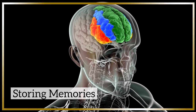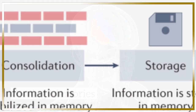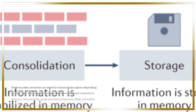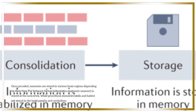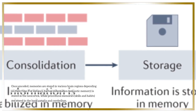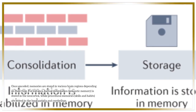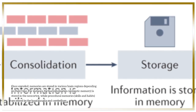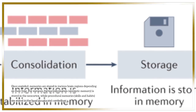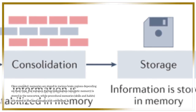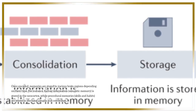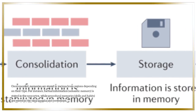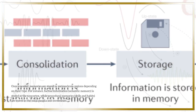Once encoded, memories are stored in various brain regions depending on their type. For instance, factual information — semantic memory — is stored in the neocortex, while procedural memories, such as skills and habits, are stored in the basal ganglia and cerebellum.